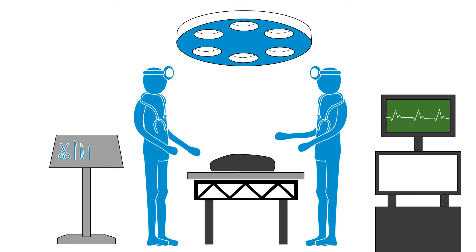For devices that are required to be direct part marked under UDI regulations, we can provide barcode scanners and readers that can read the smallest direct part mark etching.